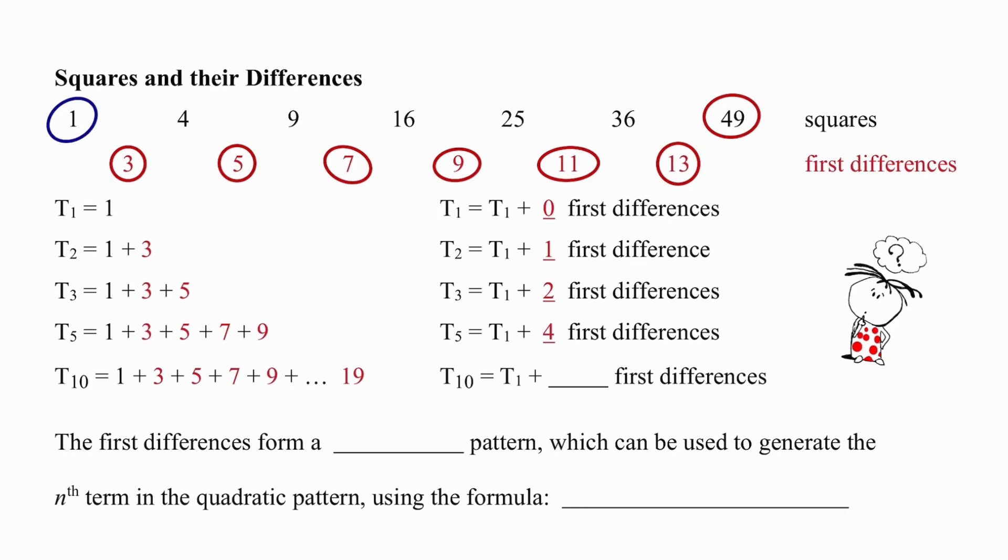This means that if we are working out the tenth term, we will add nine first differences. We can also see in this pattern, and we should know that in any quadratic pattern, the first differences row will always be a linear pattern. The formula that we are going to be working with here is that the nth term in a quadratic pattern can be generated by adding the first term and n minus one first differences.